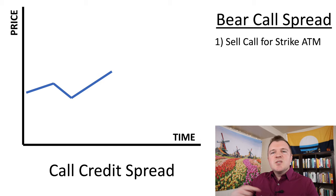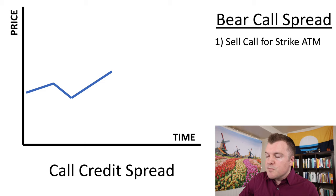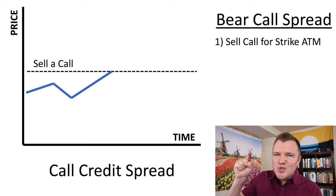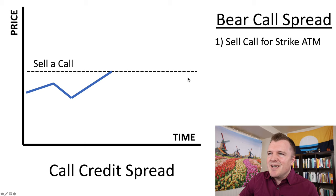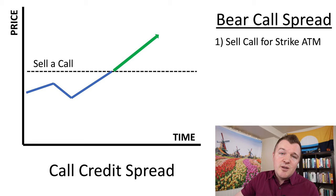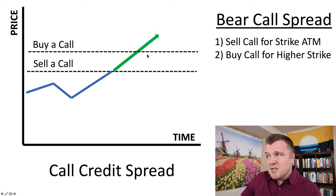Let's build the iron butterfly using the graph and then we'll use real numbers in an example. First we're going to build the call side with a bear call spread at the money. Normally with a credit spread I'd go a little higher, but with the iron butterfly you go straight for it — basically right at the money or where you think the share price will be at expiration. We sell a call here, and if you don't have 100 shares this is a naked call. Your losses are theoretically unlimited, so to cap your losses you buy a call at a higher strike. You've just created your first credit spread for the iron butterfly.